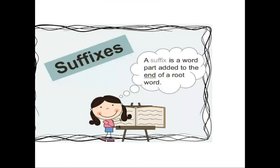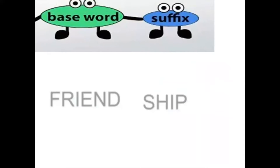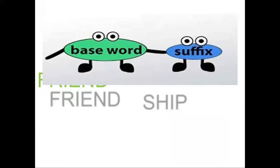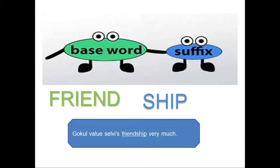Next, we are going to see about suffixes. 'Sub' means below or after, and 'fix' means to attach. A suffix is a group of letters added at the end of a base word. For example, 'friendship' — here 'friend' is the base word and 'ship' is the group of letters added to it, creating the new word 'friendship.' You can say Gokul values selfless friendship very much.